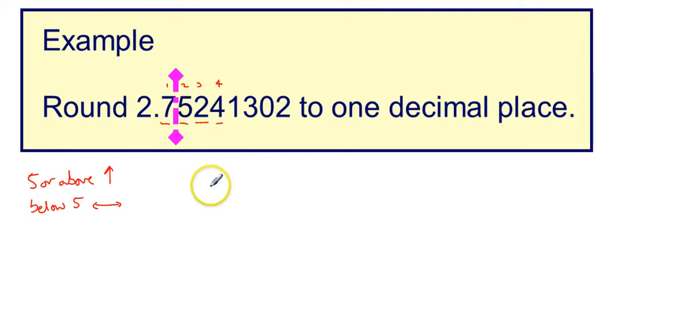So this number to one decimal place, or we can say 1 d.p. for short, is, well, we get 2.7, and we just check this. This 5 is actually 5 or above, so it actually changes this 7 up to an 8. So my answer would be 2.8 to one decimal place.